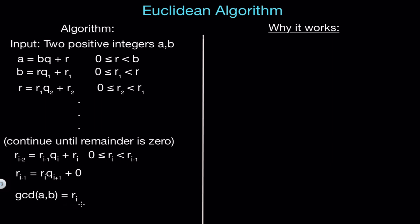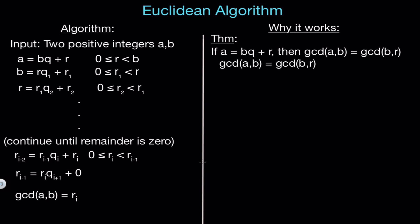As for why the GCD of A and B equals the last non-zero remainder R sub i, we can look at a theorem. The whole reason this algorithm works is based on one theorem: if A equals B times a quotient Q plus a remainder R, then the GCD of A and B is the same as the GCD of B and R. Let's assume this is true and see how it proves the validity of the Euclidean algorithm. If the GCD of A and B is the same as the GCD of B and R, we can do the same thing with B and R and R1, getting that the GCD of B and R equals the GCD of R and R1.